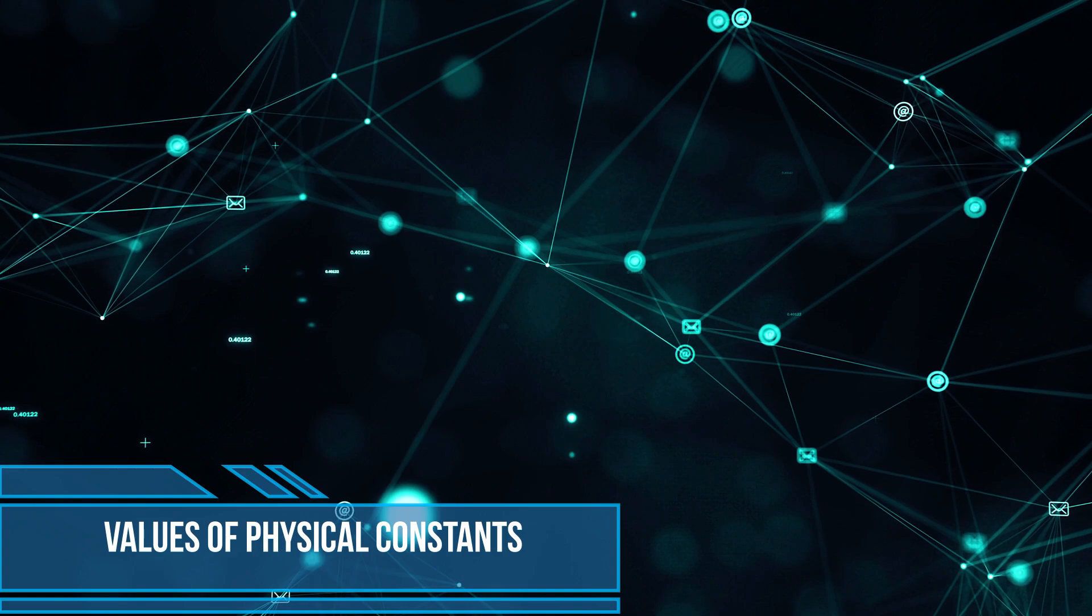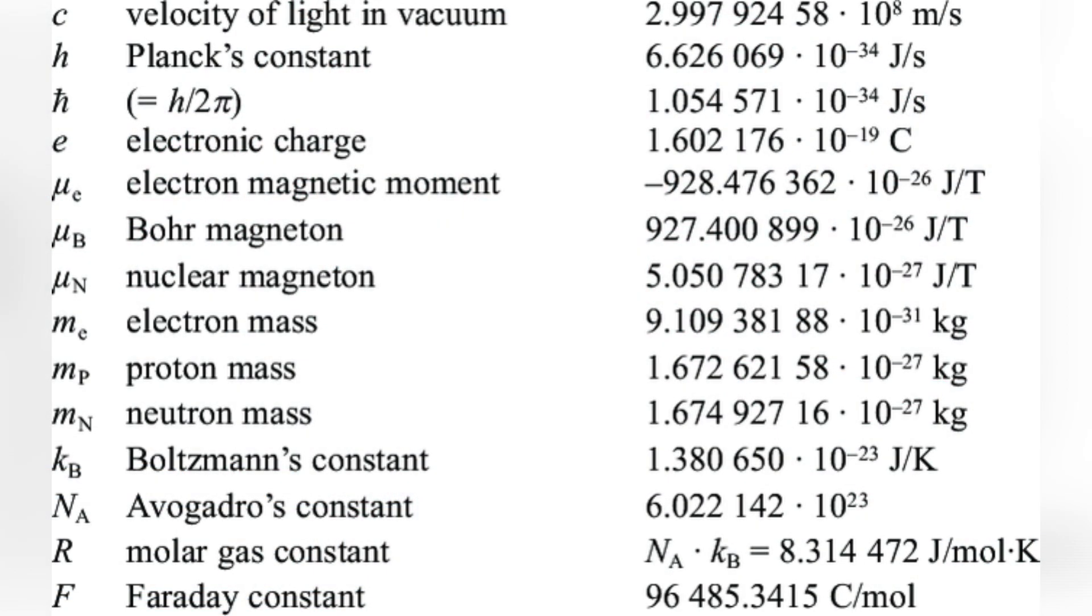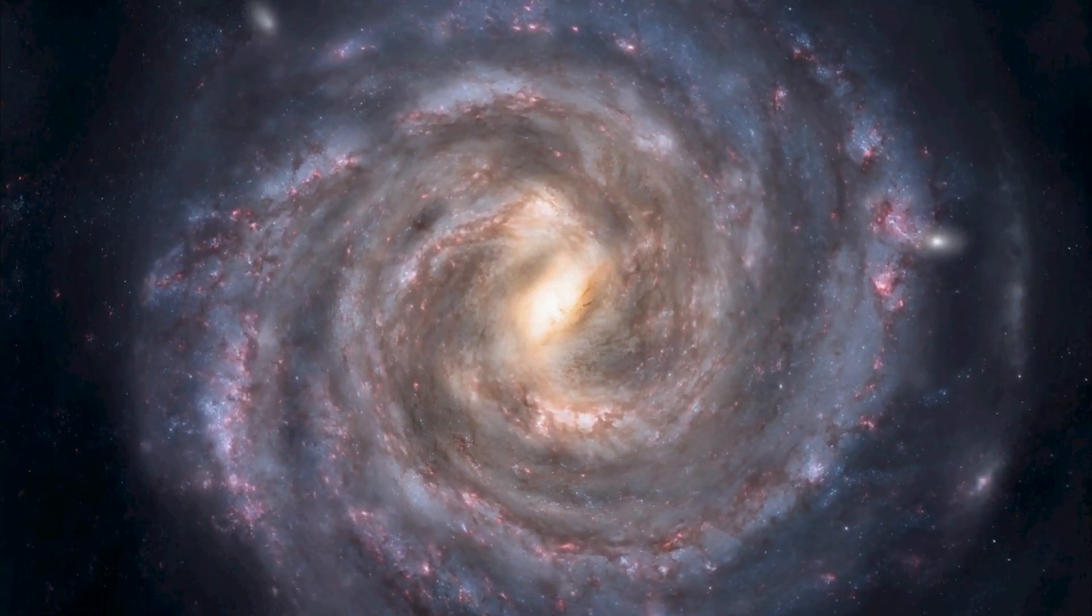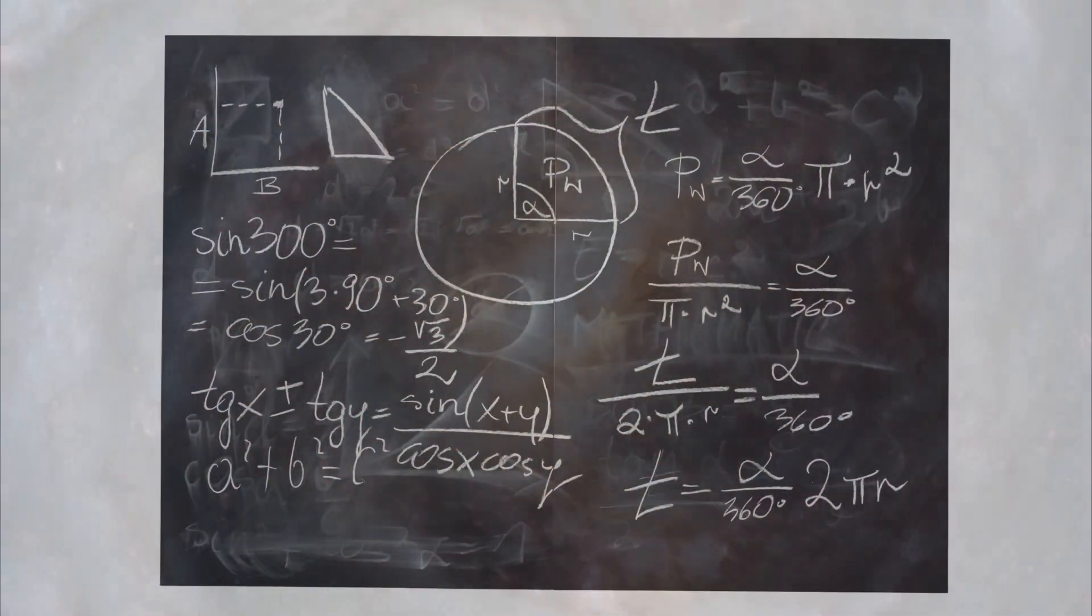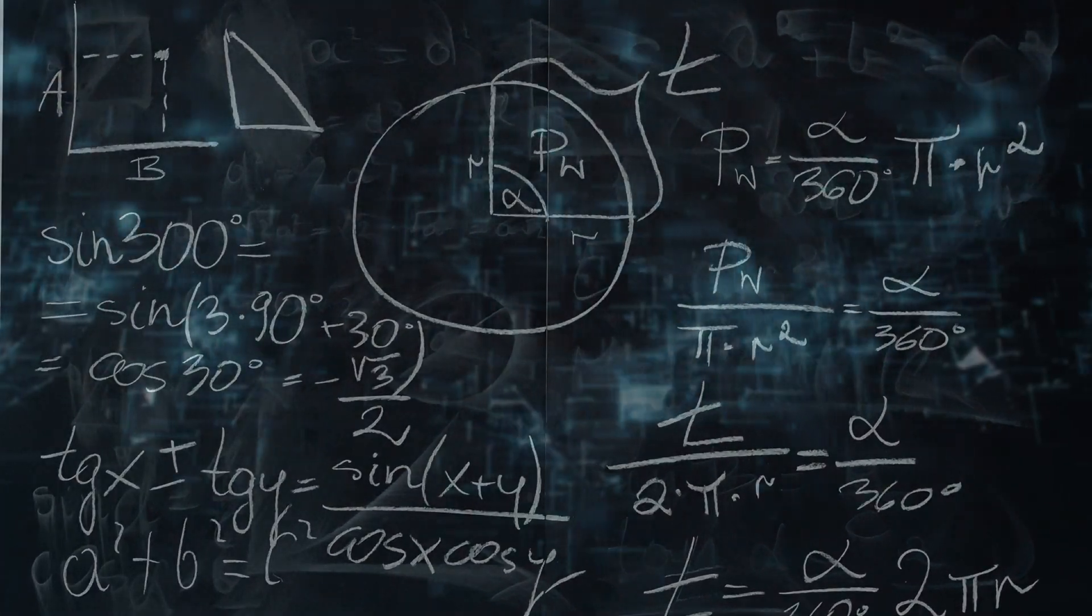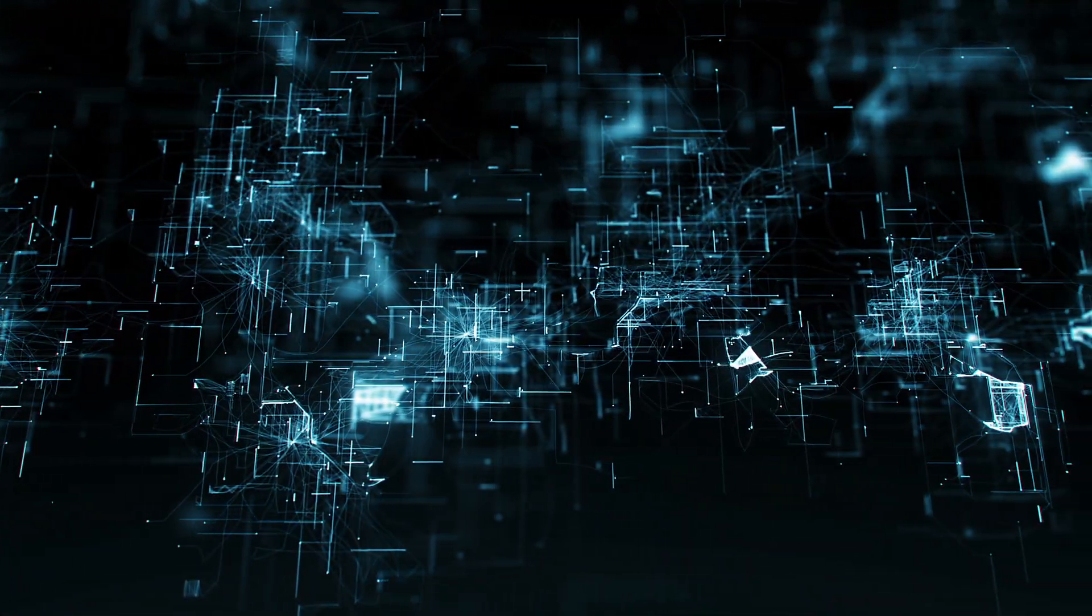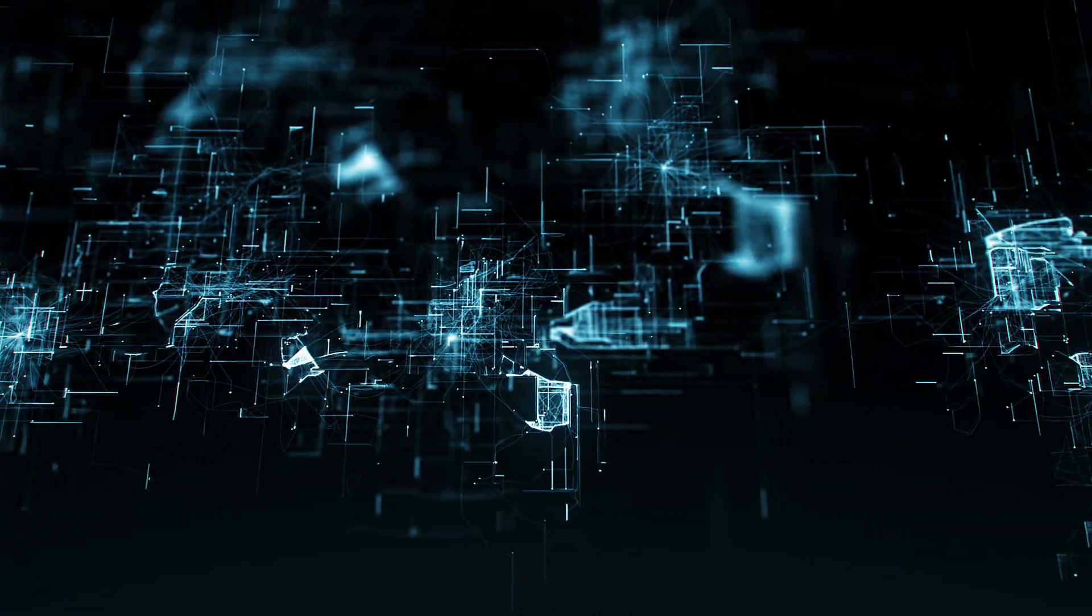Values of physical constants: proponents of the theory question the values of the physical constants observed in the universe. These constants play a critical role in the nature and structure of the universe. If these constants had different values, life as we know it might not be possible. Some argue that these constants may have been adjusted according to the requirements of a specific simulation.